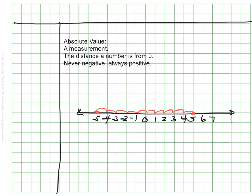In fact, all opposites have the same absolute value. We use a very specific symbol for absolute value, and it looks like two straight lines.